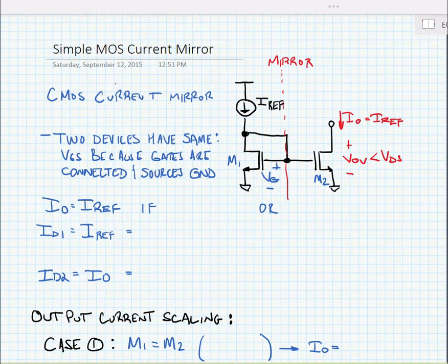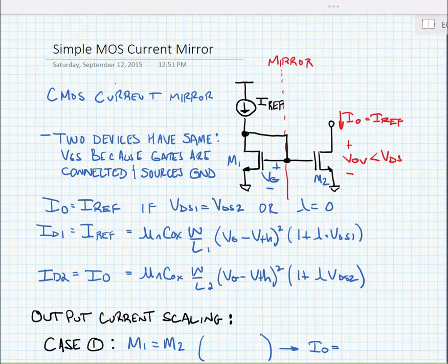So we can say that Iout is equal to IREF if VDS1 is equal to VDS2 or if lambda for the transistors is equal to zero. In other words, the output resistance of the devices is equal to zero. If that's the case, the currents are equal. Now we can write exact expressions for this. Here we can see that key piece of information. Lambda is equal to zero for the devices or if the VDSs are equal, then the currents will be exactly equal.